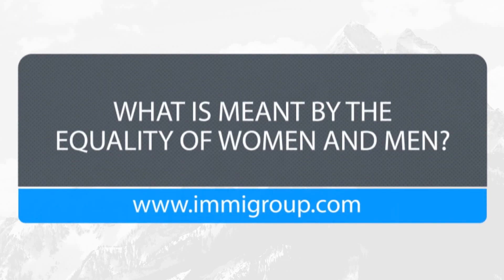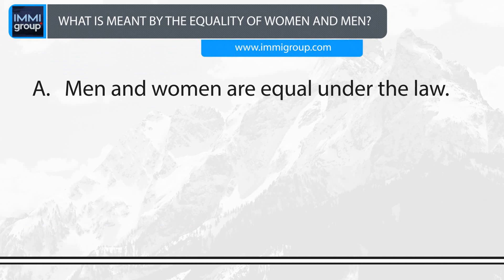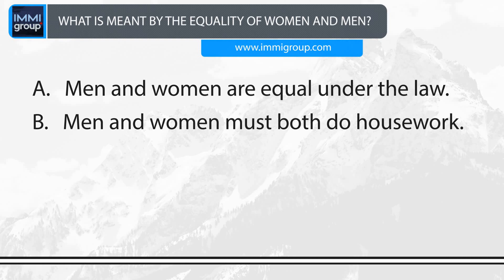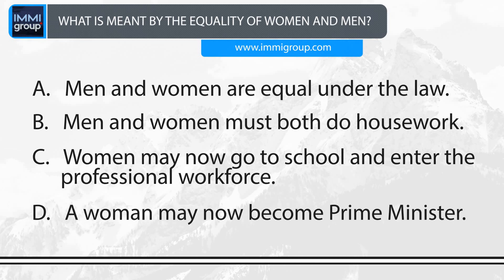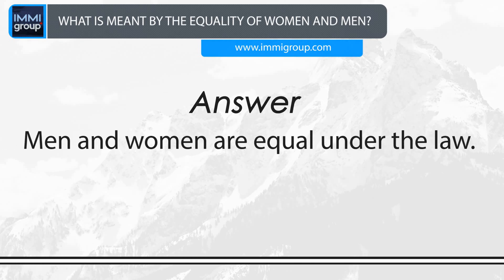What is meant by the equality of women and men? A. Men and women are equal under the law. B. Men and women must both do the housework. C. Women may now go to school and enter the professional workforce. D. A woman may now become Prime Minister. Answer: Men and women are equal under the law.